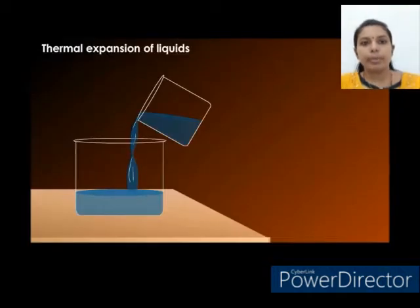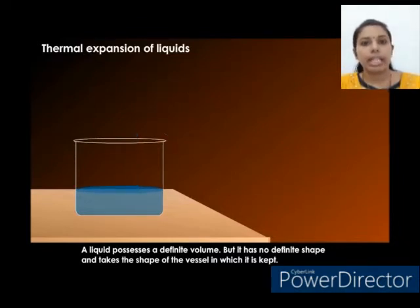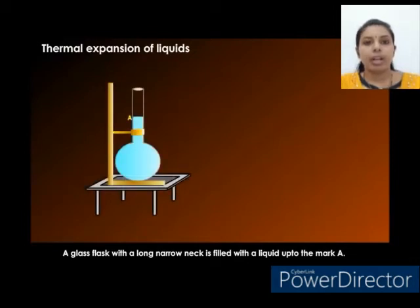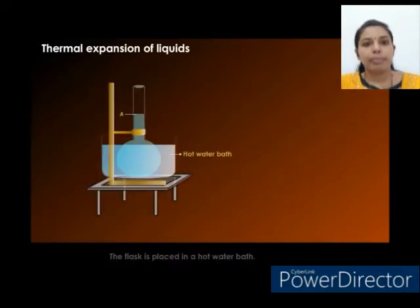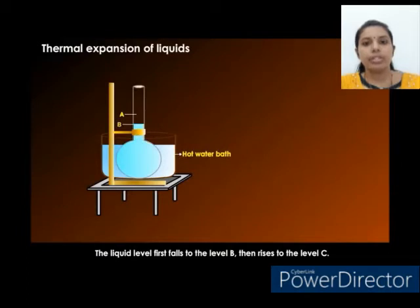A liquid possesses a definite volume, but it has no definite shape and takes the shape of the vessel in which it is kept. Liquids expand on heating. A glass flask with a long narrow neck is filled with liquid up to the mark A. The flask is placed in a hot water bath. The liquid level first falls to level B, then rises to level C.